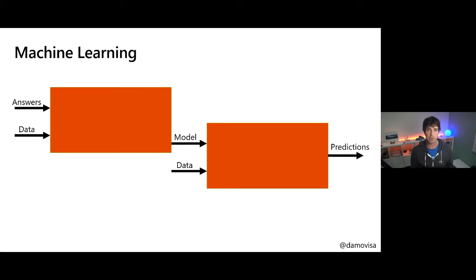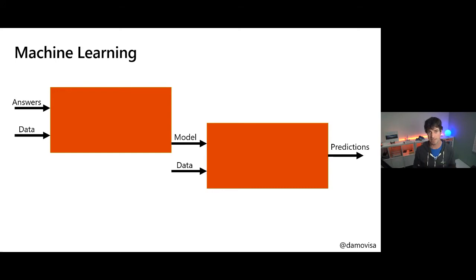We talk about the process of software development a lot, especially in DevOps, but we don't really talk about the process for machine learning projects. Part of it is because it's still a comparatively new area. If you look at software development, it's been around for a very long time. Machine learning has too, but it's only in recent years that the scale of data and power of processing has become accessible to everybody — so this machine learning stuff has started working its way into more and more applications.